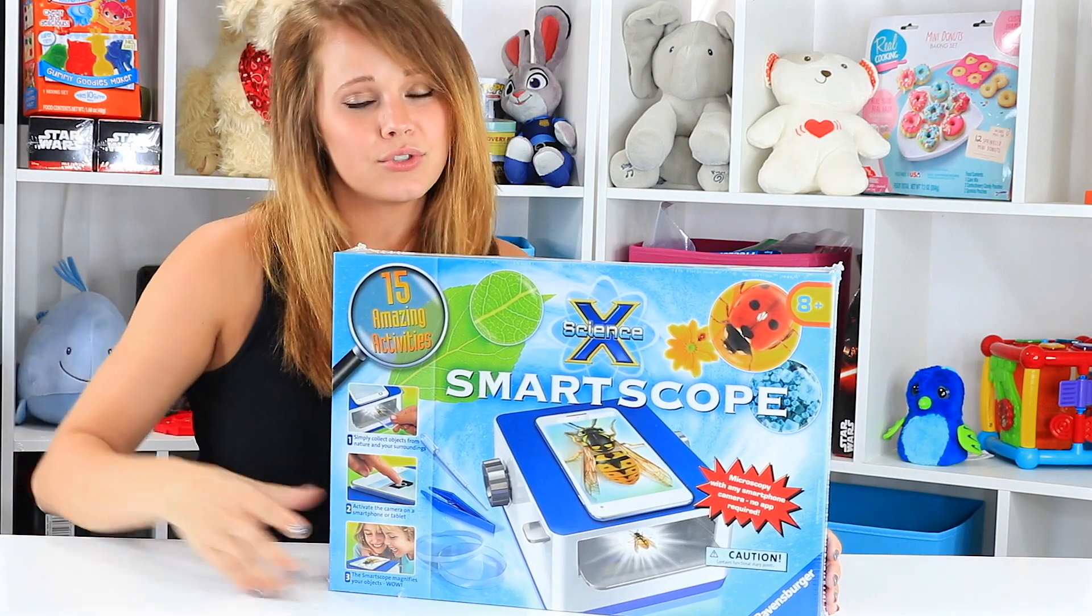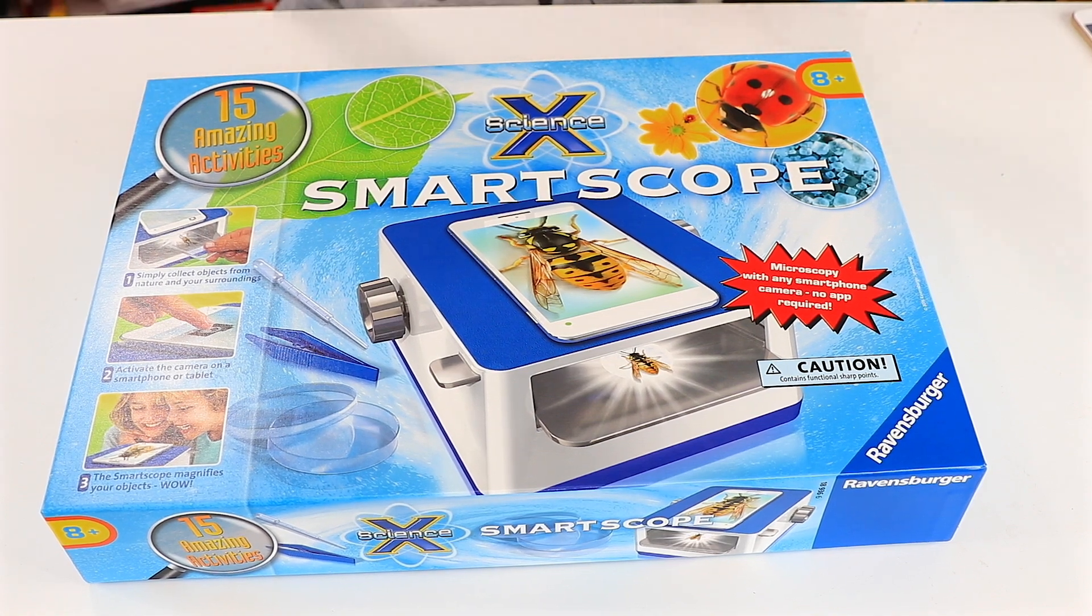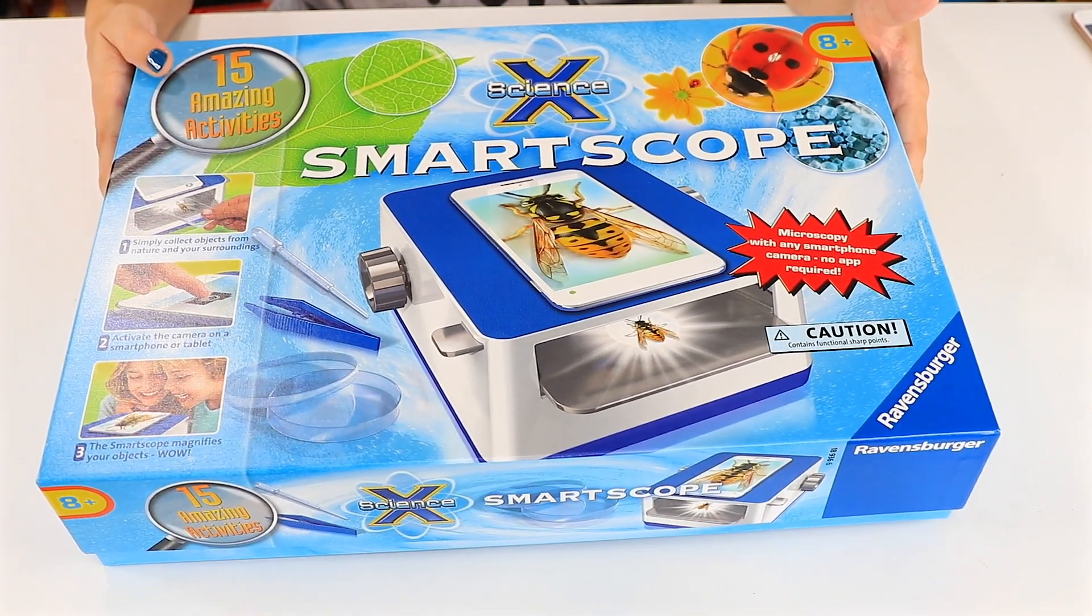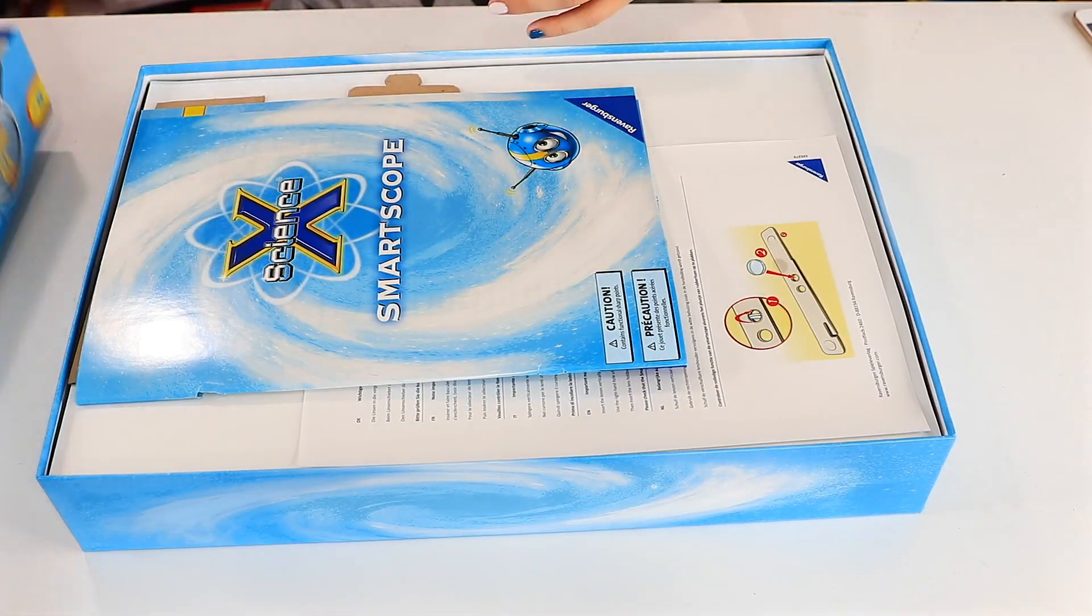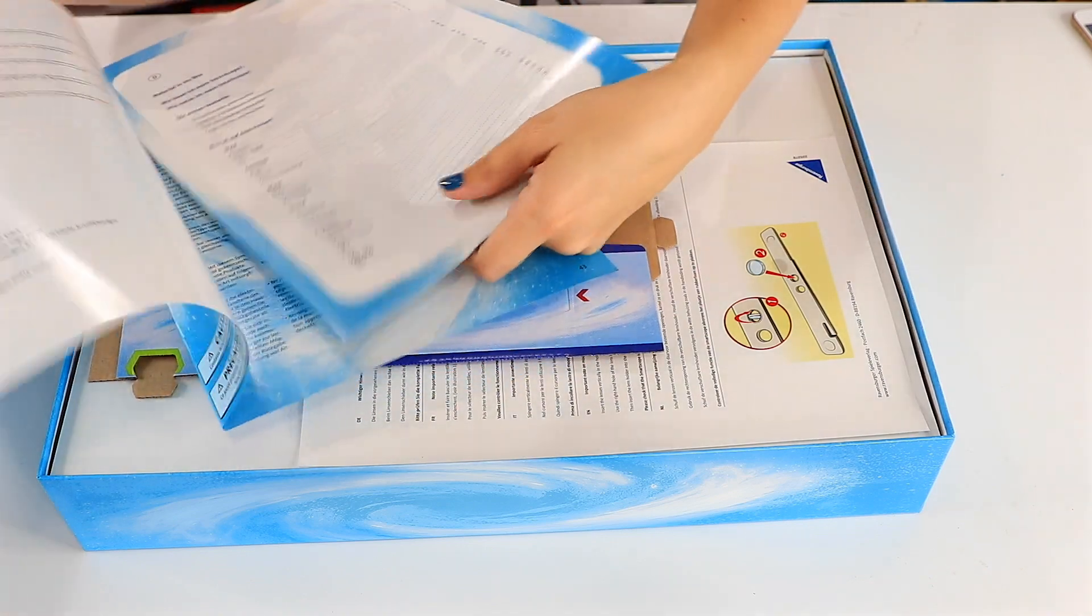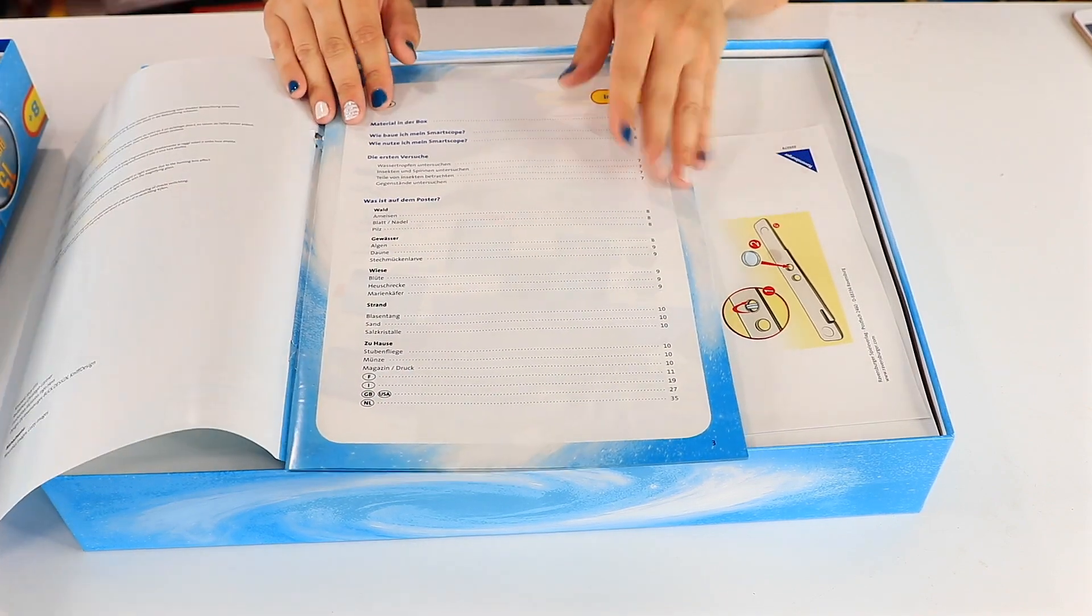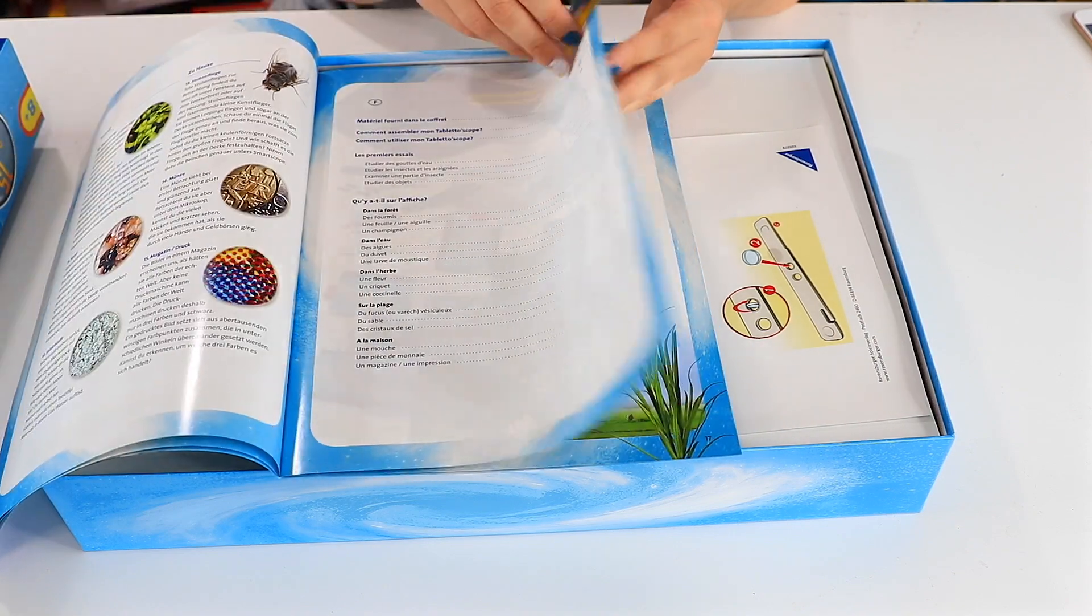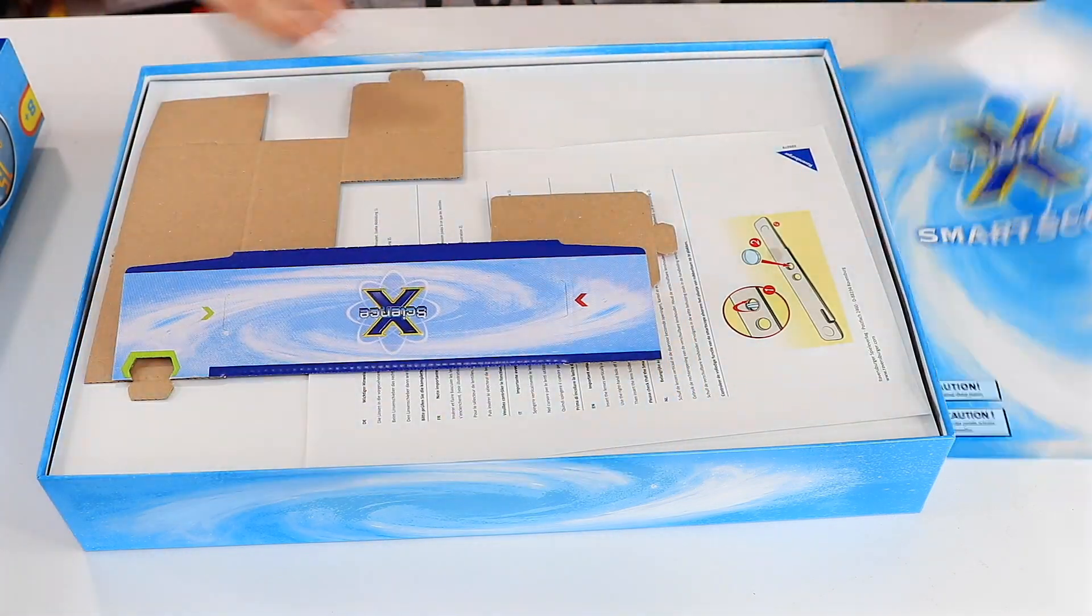Let's go ahead and bring you guys in closer, open it up, and build it. Time to open up our Science X Smart Scope. So we've got, oh this is falling apart, that's not a good sign. This is quite a thick booklet of the materials in the box, how to use them, and different things to look at, activities, so keep that nearby.